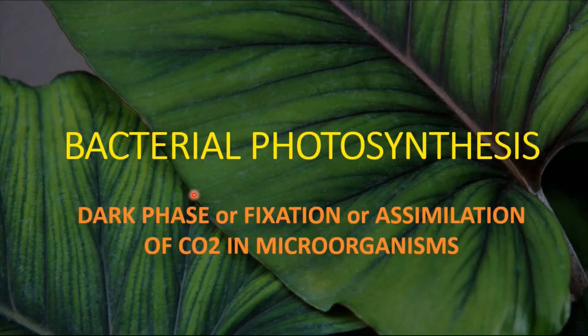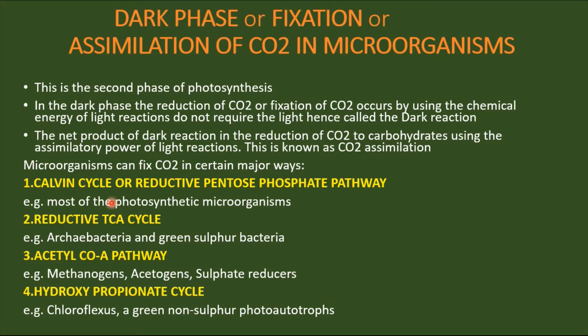Hi everyone, in the previous parts of bacterial photosynthesis we covered the light phase in different videos and the dark phase, that is fixation of carbon dioxide by different methods: the Calvin method, reductive TCA cycle method, and acetyl-CoA pathway. These three parts were discussed in different videos.